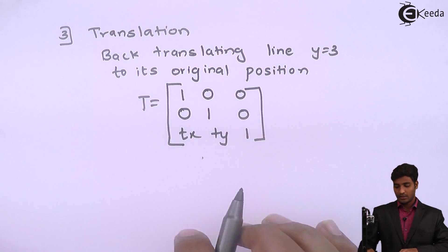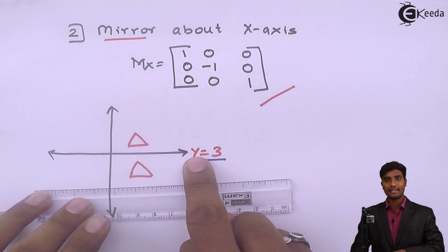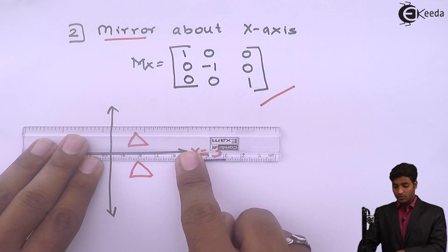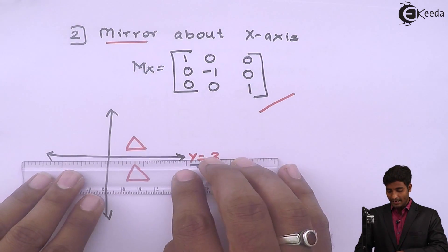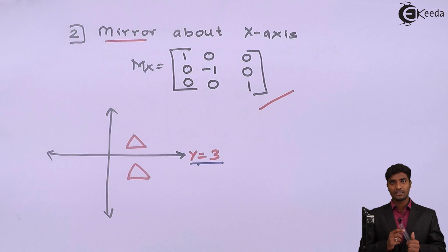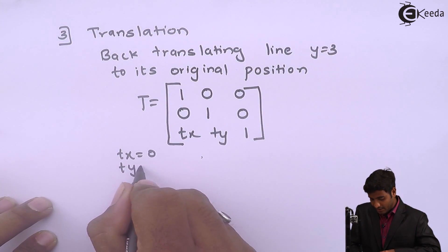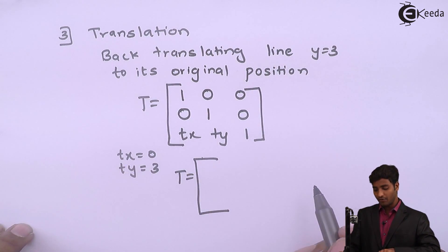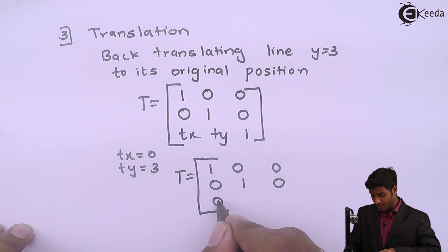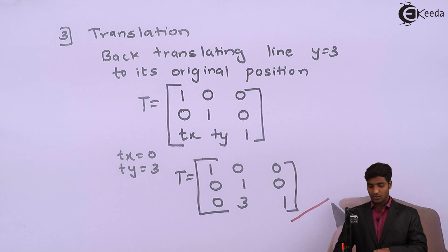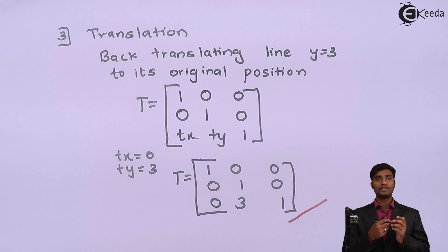The standard translation matrix is [1,0,0 / 0,1,0 / Tx,Ty,1]. We need Tx and Ty to translate line y equals 3 back to its original position. We are moving in the y direction, so Tx equals 0 and Ty equals positive 3 since we are moving upward. After replacing these values, the back translation matrix becomes [1,0,0 / 0,1,0 / 0,3,1].